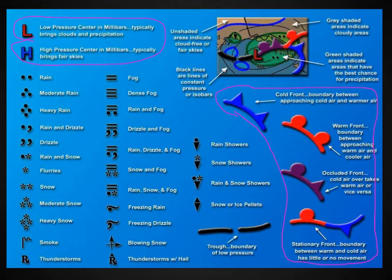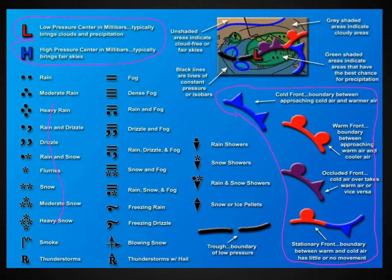Also on here are a bunch of symbols that we see in weather station models, so familiarize yourself with some of these. Notice in the weather symbols, the more symbols, the heavier the precipitation. Rain is dots — the more dots, the more rain there is. Snow are little stars — the more, the heavier the snow. And there are also symbols for drizzle and fog and all that stuff as well.